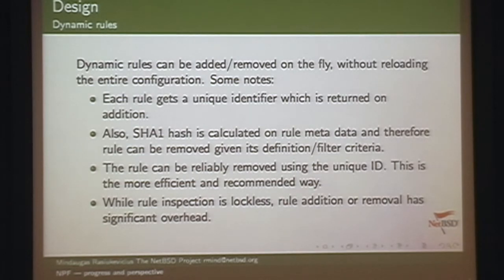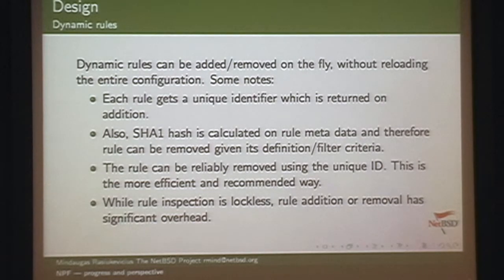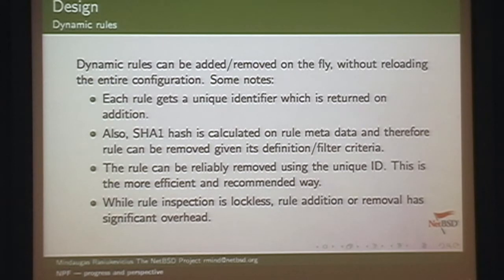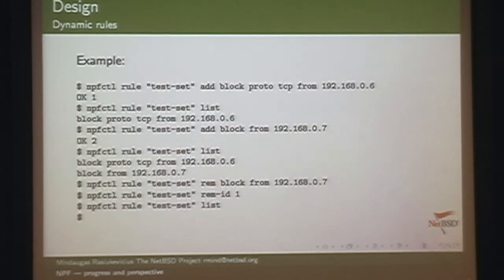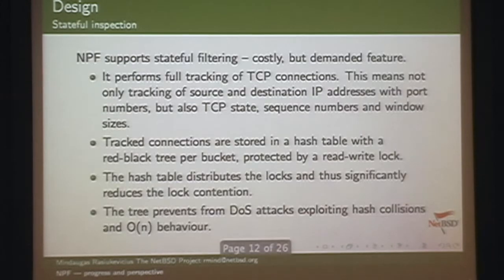Dynamic rules work similarly to iptables — you add them on the fly. When you add a rule, a unique 64-bit ID is returned so you can later remove it by ID. Alternatively, a SHA-1 hash is computed on the rule metadata, so if you specify the same filter pattern it will be detected by hash. Using the ID is recommended, but sometimes specifying the full pattern in a shell script is more convenient. You can list, flush, or remove dynamic rules within a named anchor point in your static rule set.